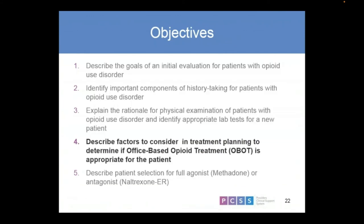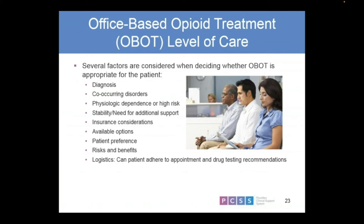Next objective: describing factors to consider in treatment planning to determine if someone is a good candidate for office-based opioid treatment. Several factors should be kept in mind. Number one — what is their diagnosis? If they don't have a diagnosis, hopefully you're not going to be prescribing for it. Do they have other issues that are going to interfere and potentially make this patient unable to do this type of work? What is their physiological state — are they at high risk for overdose? Is trying to offer this treatment going to cause more harm than good?